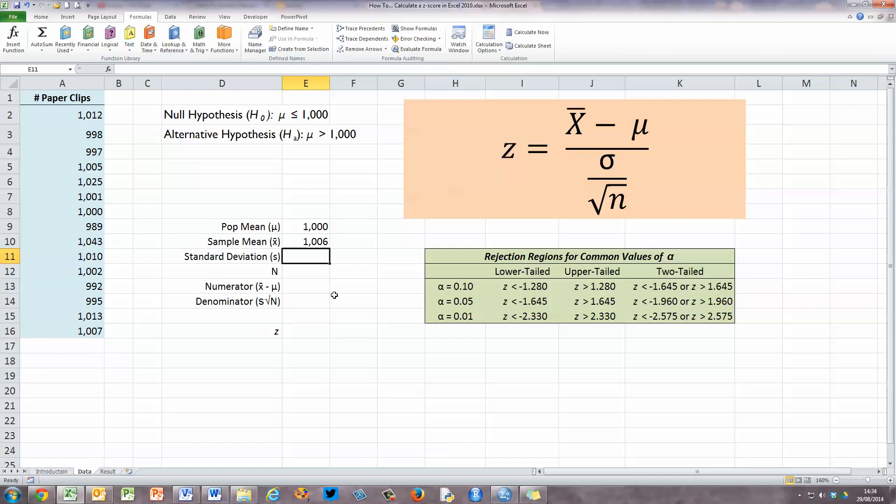Next, we've got to calculate the standard deviation of the population, and this is where we hit our first problem, because we don't know what the standard deviation of the population is. So in Z-score, in a normal distribution, we can substitute the population standard deviation with the sample standard deviation. So that's, again, relatively straightforward to calculate.